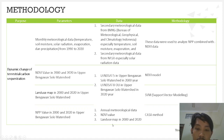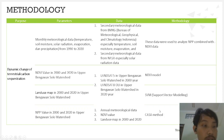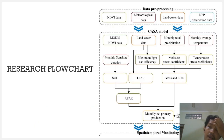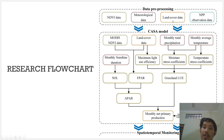Using these three data inputs, we apply the CASA method to model the NPP and carbon sequestration in the upper Bengawan Solo watershed. This is the research flowchart. The inputs are NPP data, NDVI data, and meteorological data, and with these three data sources we model the carbon sequestration using the CASA model.